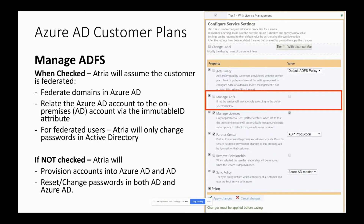We'll quickly walk through the settings. The first one is Manage ADFS. If that is checked, Atria will assume that this customer is federated and will attempt to federate domains in Azure AD when provisioning the tenant. You can flag specific domains to be federated, so you can have some domains federated and some that aren't. When this is checked, it also signifies that Atria needs to set the immutable ID on the Azure AD account to link it back to the Active Directory account.